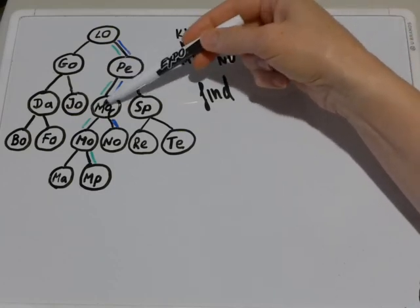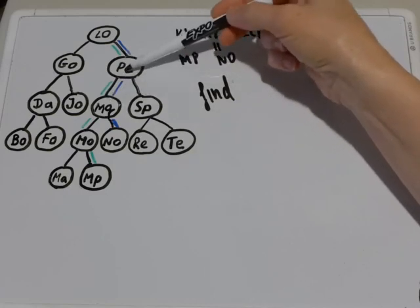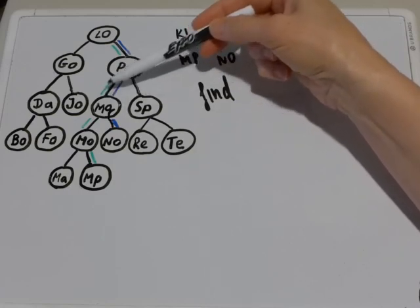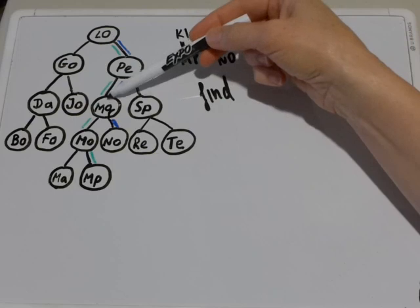They both are less than PE. That means PE is not lowest common ancestor. So we make a recursive call on the left child of PE.